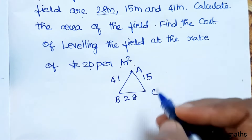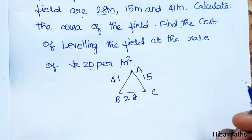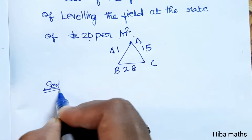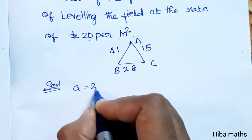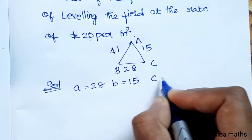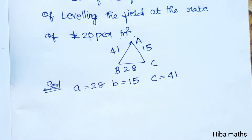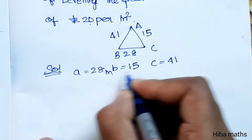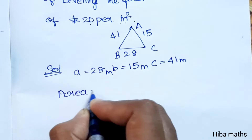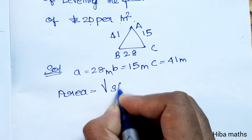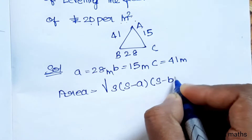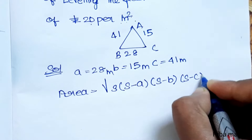So, to find the area of the field, we use Heron's formula. Heron's formula gives the area as the square root of S into S minus A into S minus B into S minus C.